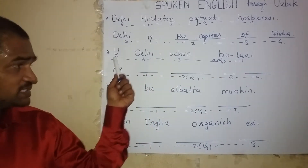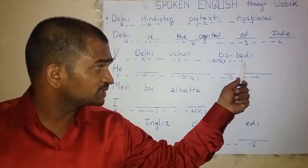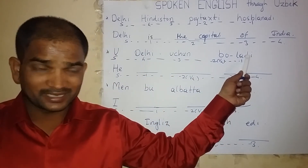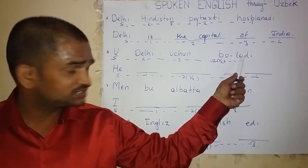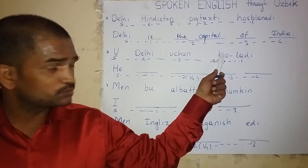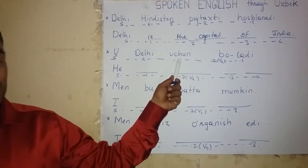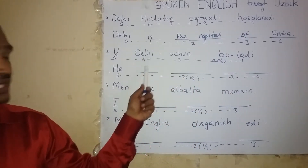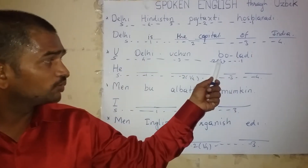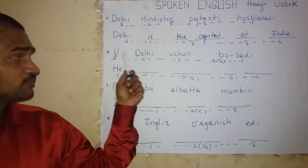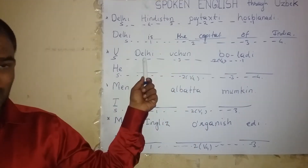First, we find the subject — he. Then go to the end of the sentence: above one is ladi, the English word for ladi is 'is.' Before one, above two is Bo — the English word for Bo is 'going.' The English word for Wutsun is 'to.' The English word for Delhi is Delhi. He is going to Delhi.